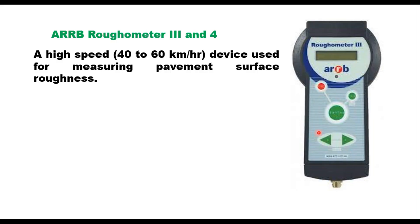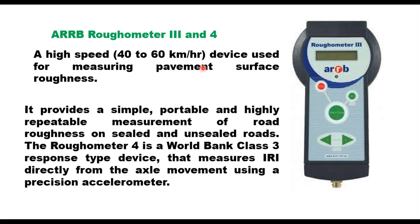The ARRB roughometer 3 and 4 is a high-speed device used for measuring pavement surface roughness, run at a speed of 40 to 60 km/h. It provides simple, portable, and highly repeatable measurements of road roughness on sealed and unsealed roads. The roughometer 4 is a World Bank Class 3 response type device that measures IRI directly from axle movement using a precision accelerometer.